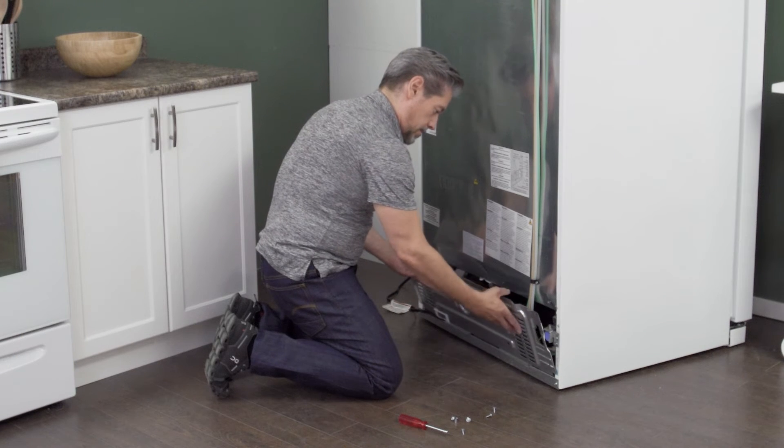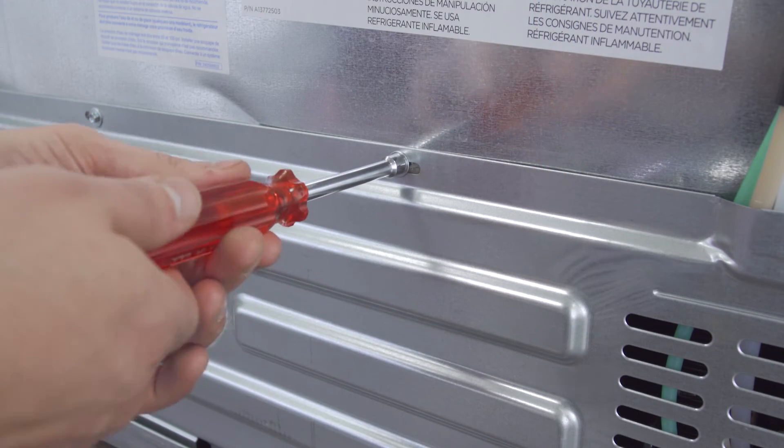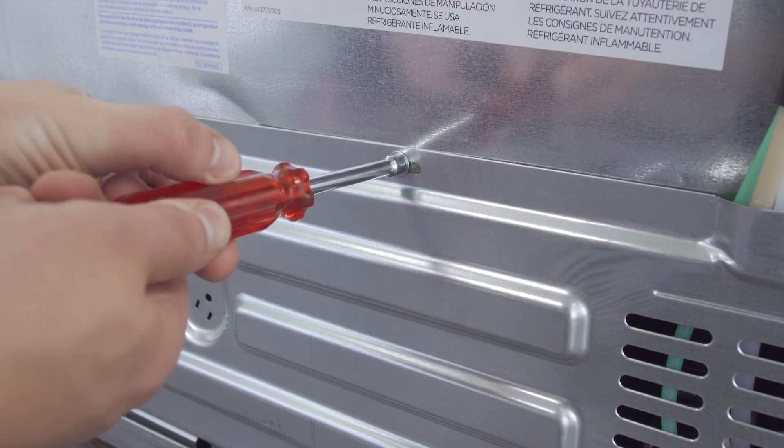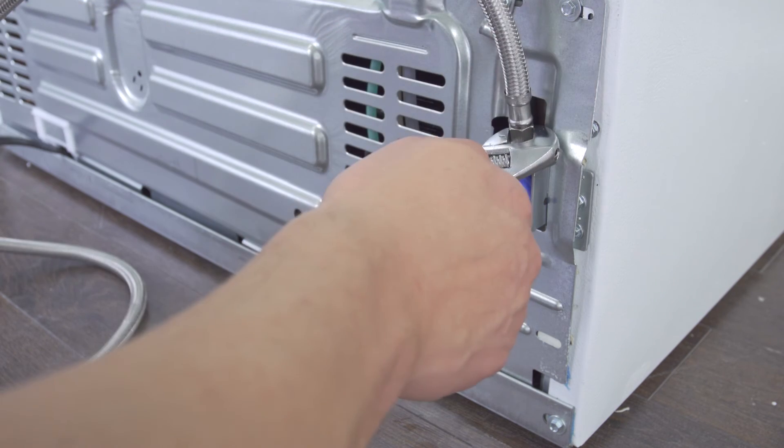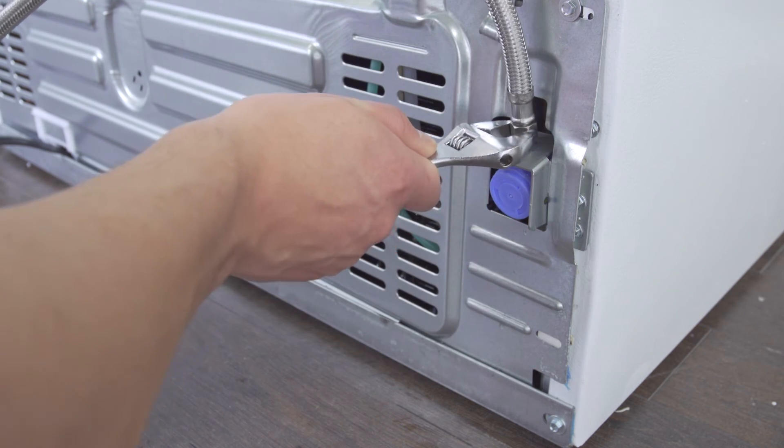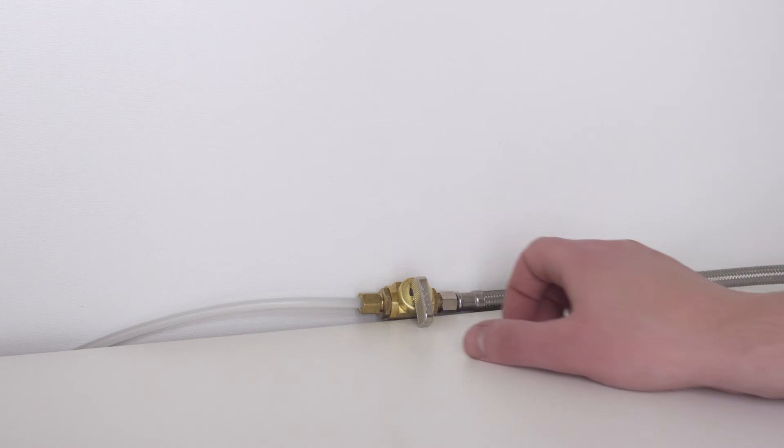Align the back panel onto the mounting tabs. Now tighten the screws. Reconnect the water supply and tighten the connection. Open the shutoff valve.